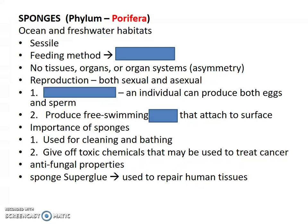At one time, they were classified as plants because in the stage that they're most visible, they don't move around and they do kind of look like plants. In fact, many sponges have a symbiotic relationship with algae, and so they will have photosynthesis going on, but the sponge itself doesn't do photosynthesis. Its feeding method is filter feeding.